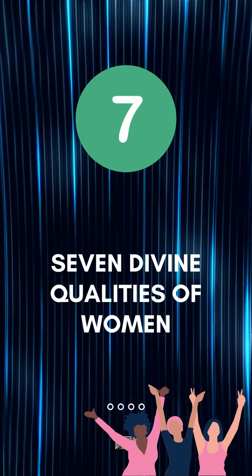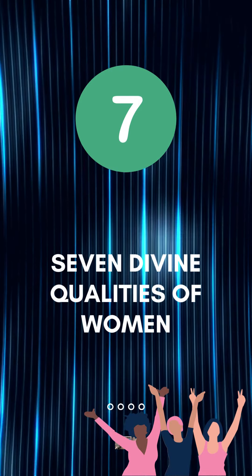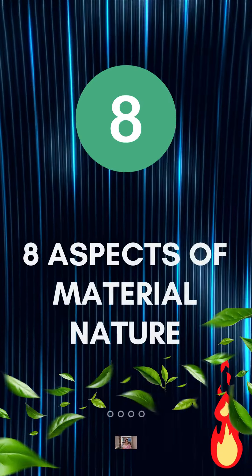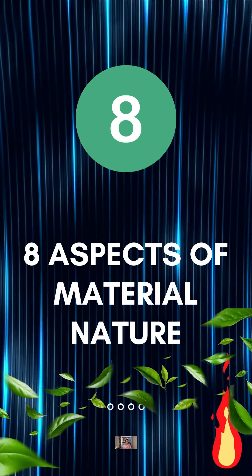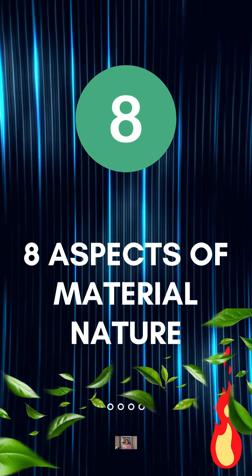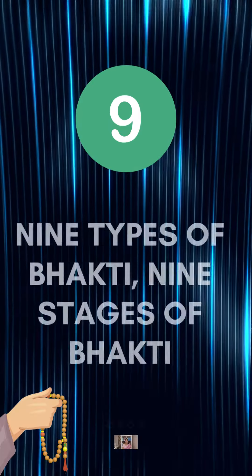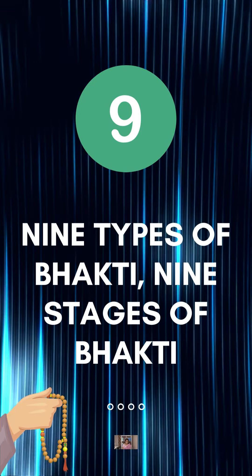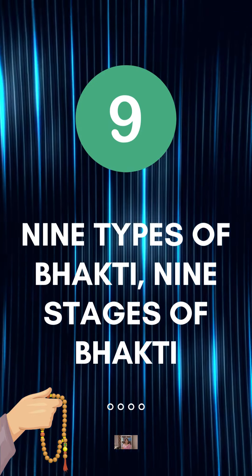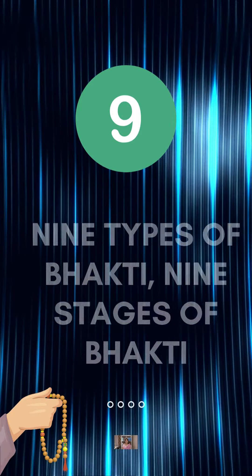Seven: the seven divine qualities of women. Eight: the eight aspects of material nature. Nine: the nine types of bhakti and the nine stages of bhakti.